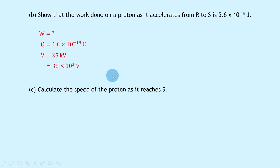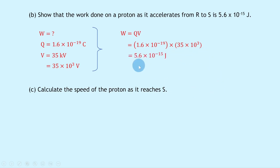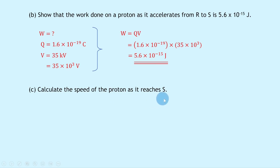Writing down our equation for work done: W = qV. Substituting in the numbers gives 1.6 × 10⁻¹⁹ × 35 × 10³. Putting that into the calculator gives 5.6 × 10⁻¹⁵ joules, which is what we were asked to show. Part (c) asks us to calculate the speed of the proton as it reaches S.